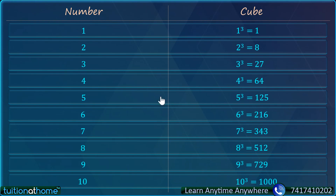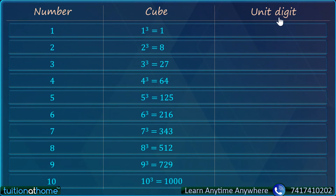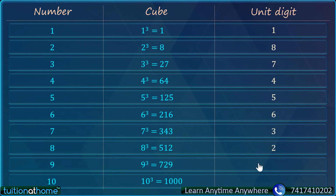What we are going to learn now is very important, because not only have we understood cubes, but we will also see some properties and patterns. Let us talk about the unit digit — the way we talked about unit digit in squares, let us see the unit digit in cubes of these numbers. Just observe: 1 cube ends in 1, 2 cube ends in 8, 3 cube ends in 7, 4 cube ends in 4, 5 cube ends in 5, 6 cube ends in 6, 7 cube ends in 3, 8 cube ends in 2, 9 cube ends in 9, 10 cube ends in 0. So at the unit place we can have any digit: 0, 1, 2, 3, 4, 5, 6, 7, 8, 9.